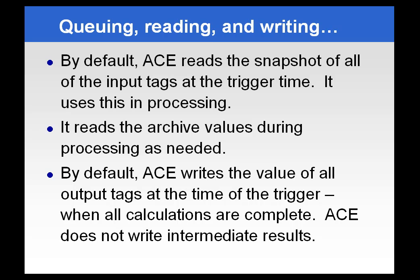ACE works by default by reading all the snapshot values of any input tags at trigger time and using these values during processing. If there are any archive values required — say you use a tag average or other function that retrieves a range of values — the ACE calculation will go into the archive and retrieve any values it needs. So by default, ACE will gather snapshots, gather archive values, and perform calculations. It will write the result at the end of the calculations, but it will be timestamped with the trigger time, so you get the correct timestamp even if it appears a few seconds later.